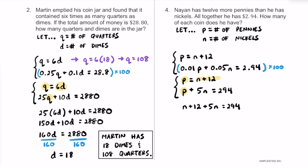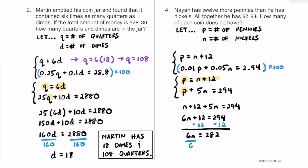Combining like terms, 1N and 5N make 6N. So 6N plus 12 equals 294. Subtracting 12 from both sides gives 6N equals 282. Dividing both sides by 6, we find N equals 47.